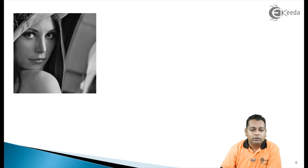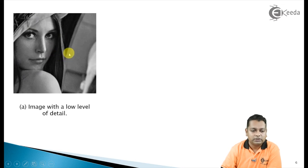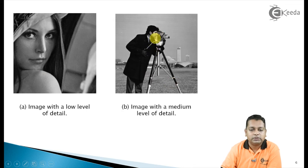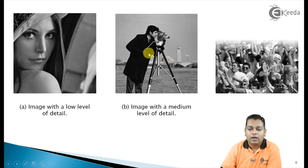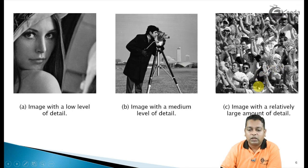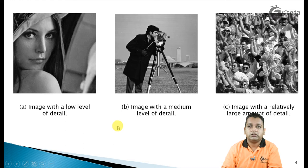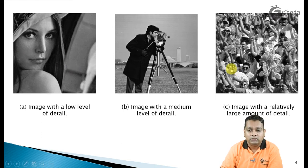We have further examples showing three images with different levels of detail. The first image has a low level of detail with a face as the subject. The second image shows a cameraman and has a medium level of detail, requiring more intensity levels than the first. The third image contains more objects and is an image with a relatively large amount of detail — or information, since an image is a signal that carries information. The information content increases from image A to image C.